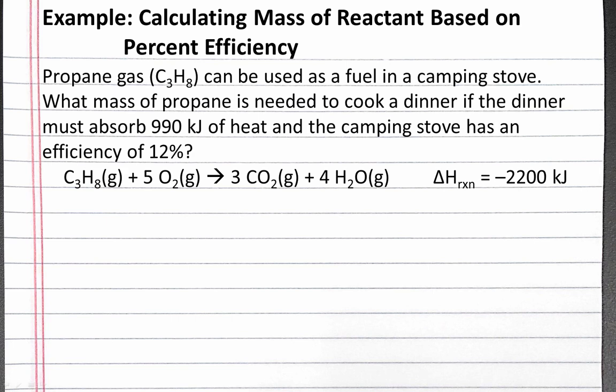In this example problem, we'll calculate the mass of a reactant needed based on the percent efficiency of a combustion reaction and the actual amount of heat that needs to be absorbed. Our problem reads: propane gas, which is C3H8, can be used as a fuel in a camping stove. What mass of propane is needed to cook a dinner if the dinner must absorb 990 kJ of heat and the camping stove has an efficiency of 12%?